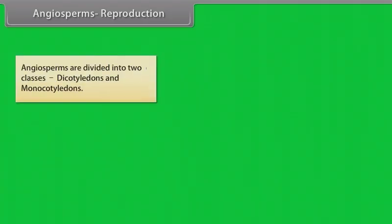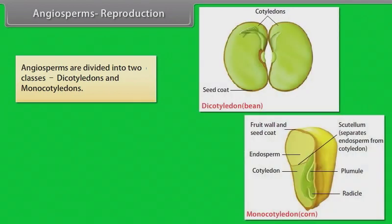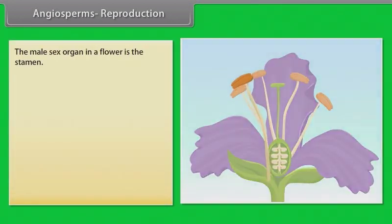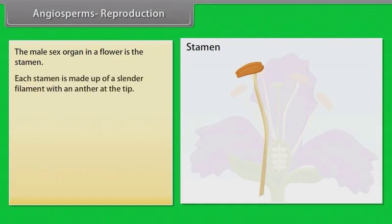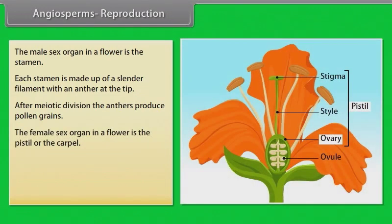Angiosperms are divided into two classes: Dicotyledons and Monocotyledons. The dicotyledons have two cotyledons in their seeds while the monocots have only one. The main sex organ in a flower is the stamen. Each stamen is made up of a slender filament with an anther at the tip. After meiotic division the anthers produce pollen grains. The female sex organ in a flower is the pistil or the carpel.